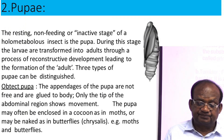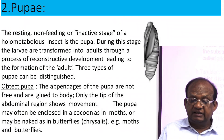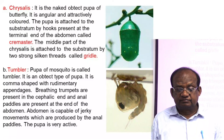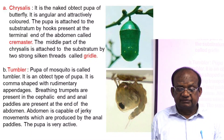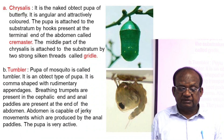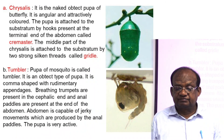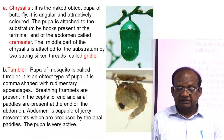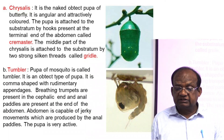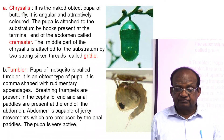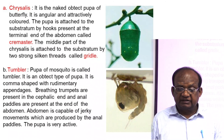Chrysalis is a naked obtect butterfly pupa. It is angular and attractively colored. The pupa is attached to the substratum by a hook present at the terminal end of the abdomen called the cremaster. The middle part of the chrysalis is attached to the substratum by two strong silk threads, and that second attachment structure is called the girdle.